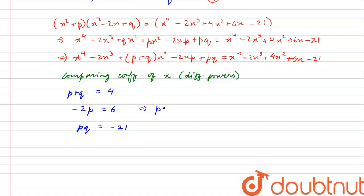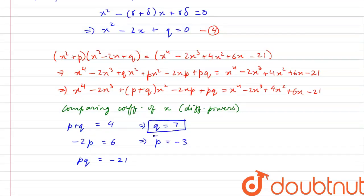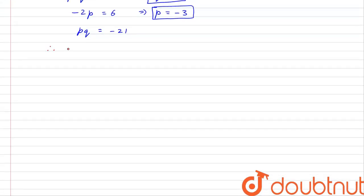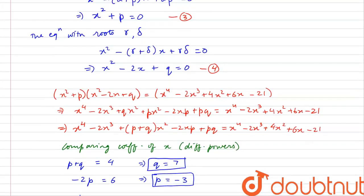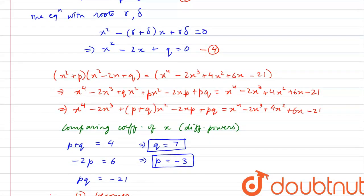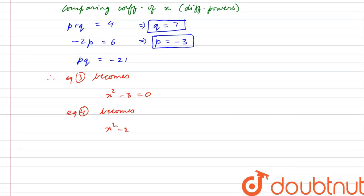From the coefficient of x equation, minus 2P equals 6, which directly gives us P equals minus 3. Substituting into P plus Q equals 4, we get Q equals 7. We can verify this also satisfies PQ equals minus 21. With these values, equation 3 becomes x squared plus P, which is x squared minus 3 equals 0, and equation 4 becomes x squared minus 2x plus Q, which is x squared minus 2x plus 7 equals 0. These are our two quadratic equations.